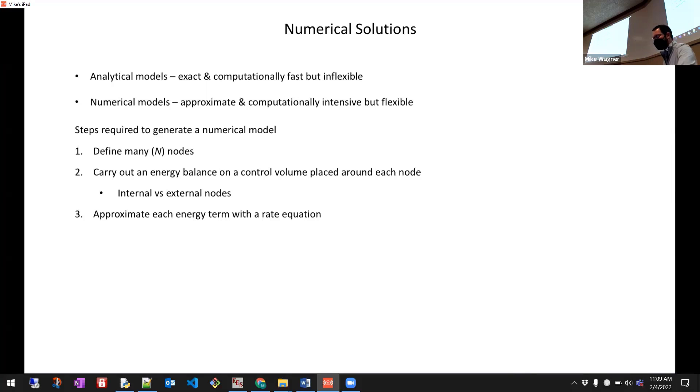Step three is then we approximate each energy term with a rate equation. So we have our control volume. We have energy terms that go into that control volume or the energy balance, and we end up with these terms that we need rate equations for. And the difference here for numerical models is instead of calling this Q dot R, Q dot R plus DR, we're actually writing rate equations, usually in terms of a resistance model. So you have an algebraic equation. It's just one temperature minus another divided by some resistance that has to do with the size of that node and what's happening in that node.